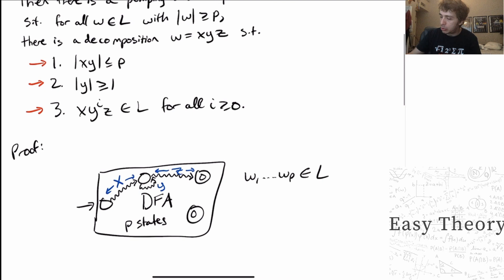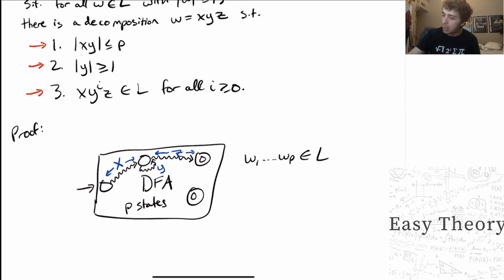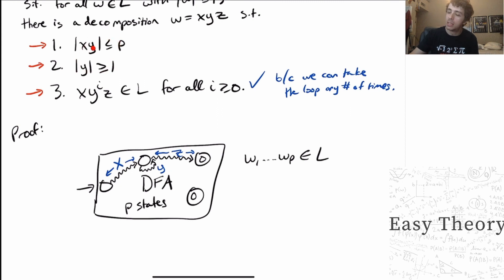Let's think about why these conditions are true. The third condition is justified purely because it says we can take the y part as many times as we want. If we take the x part, go around the loop as many times as we want, and then take the z part, we're still going to be in the final state regardless — which means it should be in the language. So this is justified because we can take the loop any number of times. Without this third condition, we could just break up the string however we want according to the other two conditions, and that wouldn't tell us anything useful.